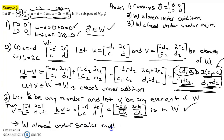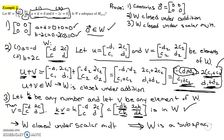Since we've shown all three conditions — the zero vector is in W, W is closed under addition, and W is closed under scalar multiplication — we can conclude that this collection W is a subspace of the vector space M₂₂, the collection of all 2×2 matrices.